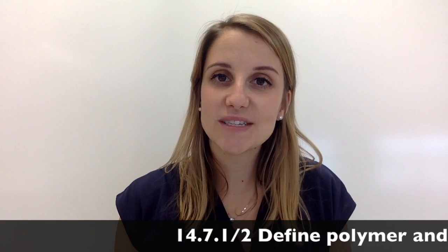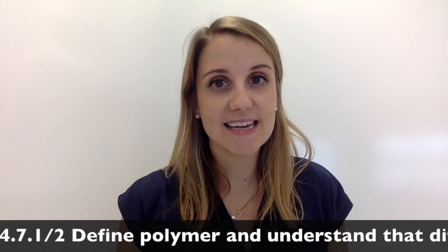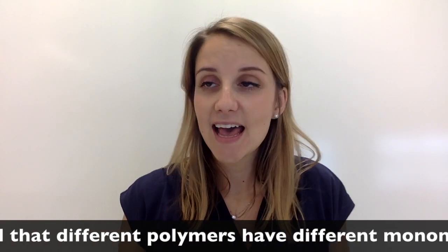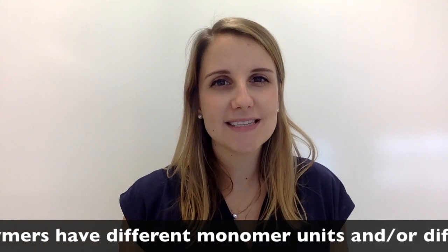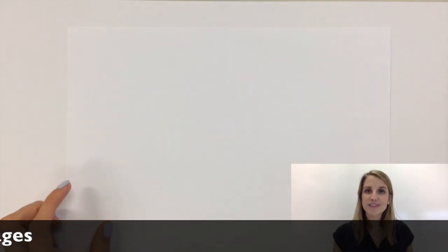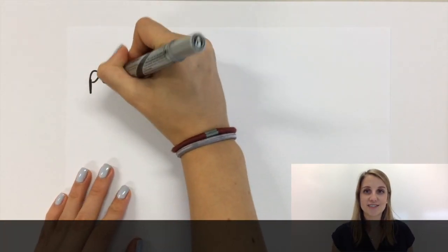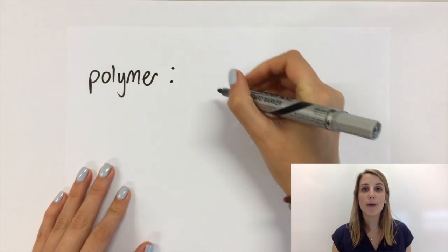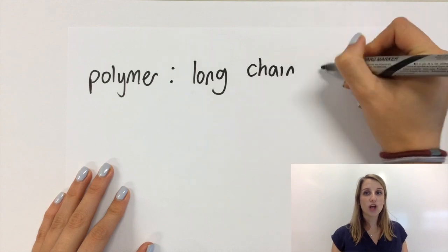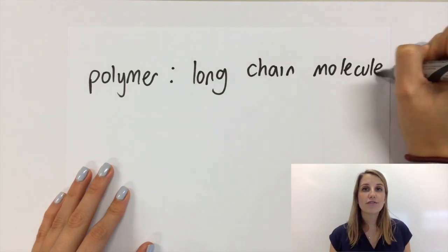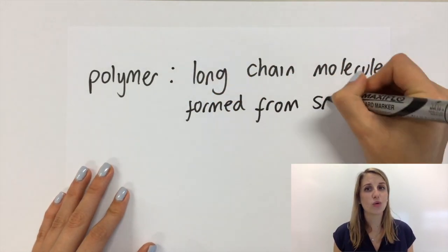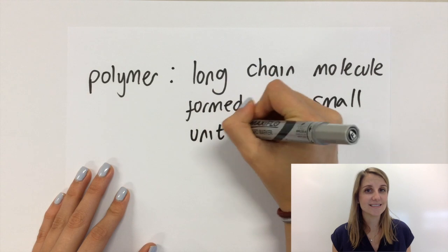This video is all about the basics of what a polymer is and what makes them different from each other. Let's start with the definition. A polymer is a long-chain molecule that forms from much smaller units that are called monomers.